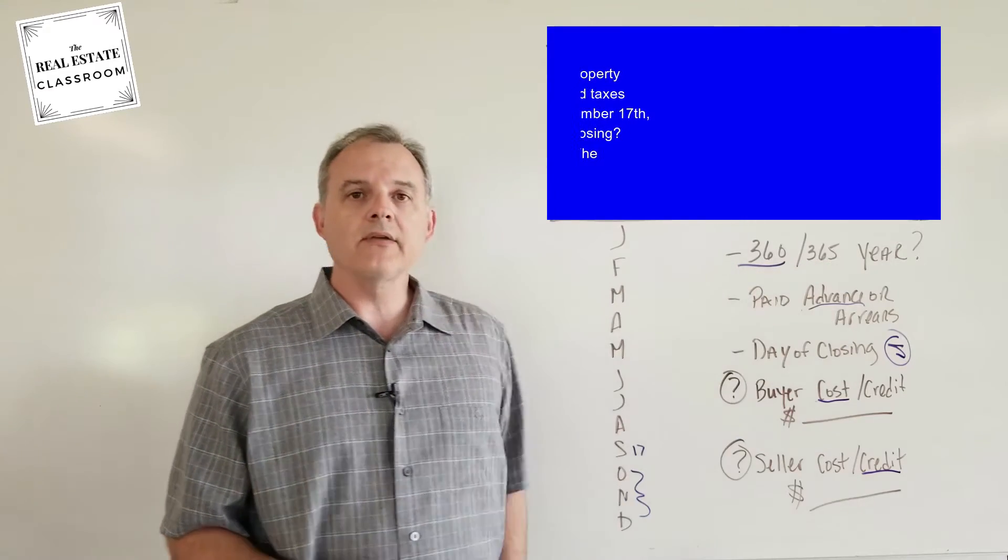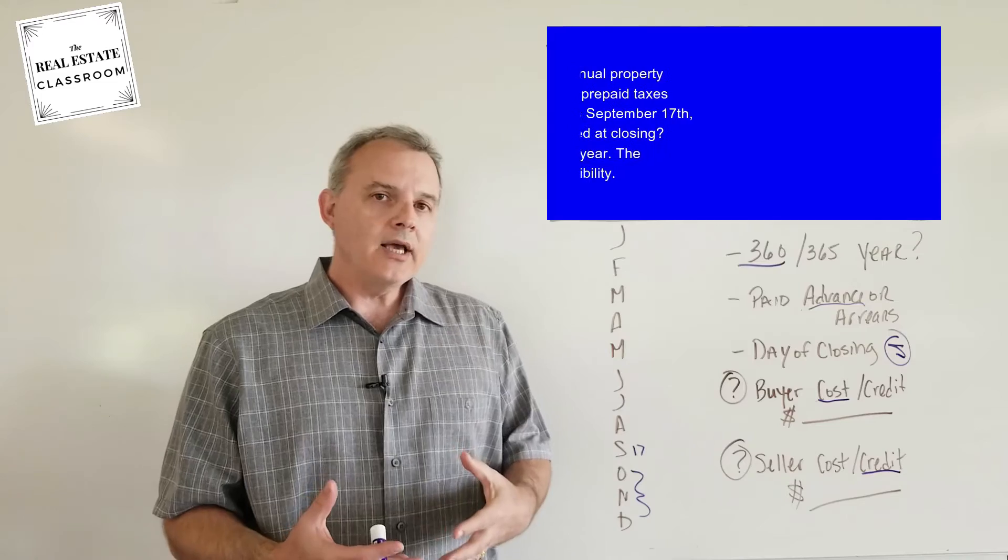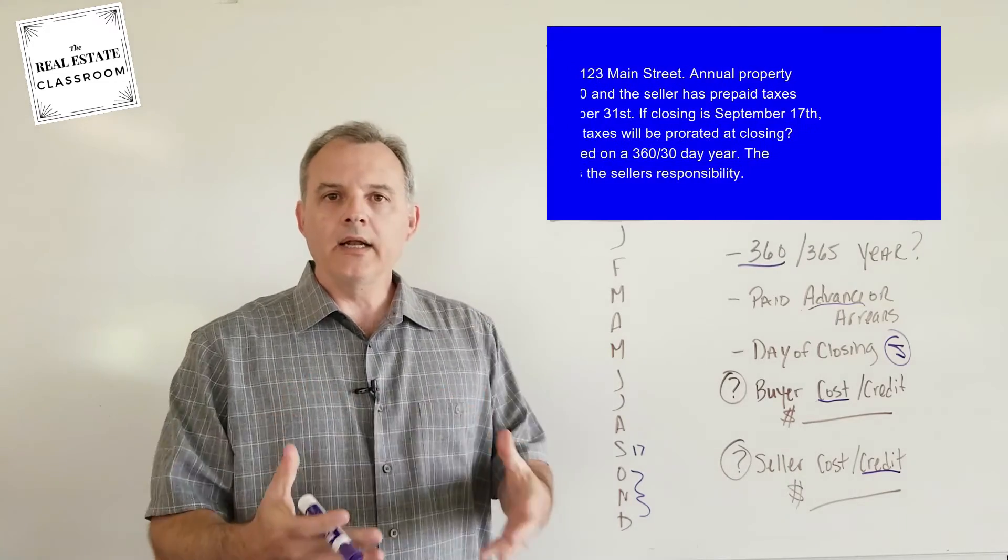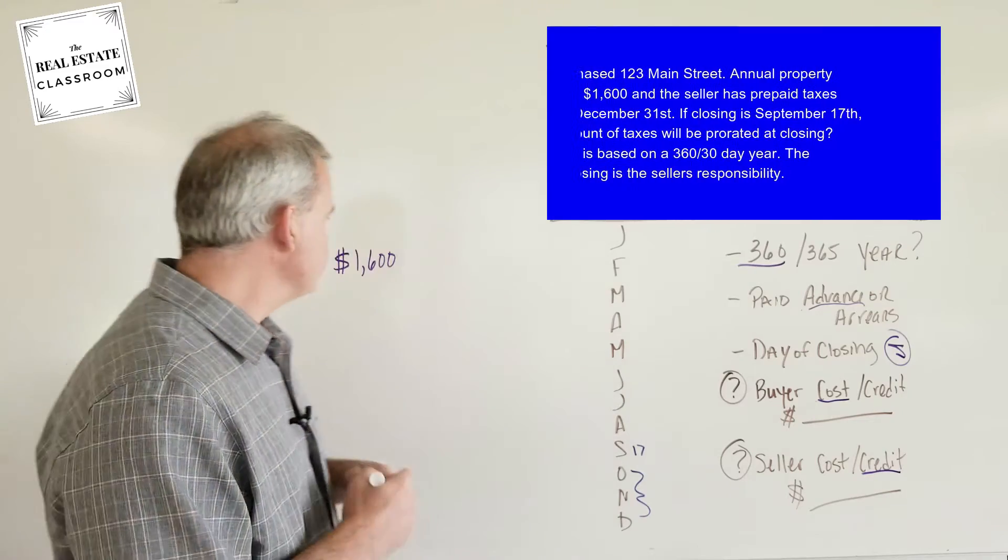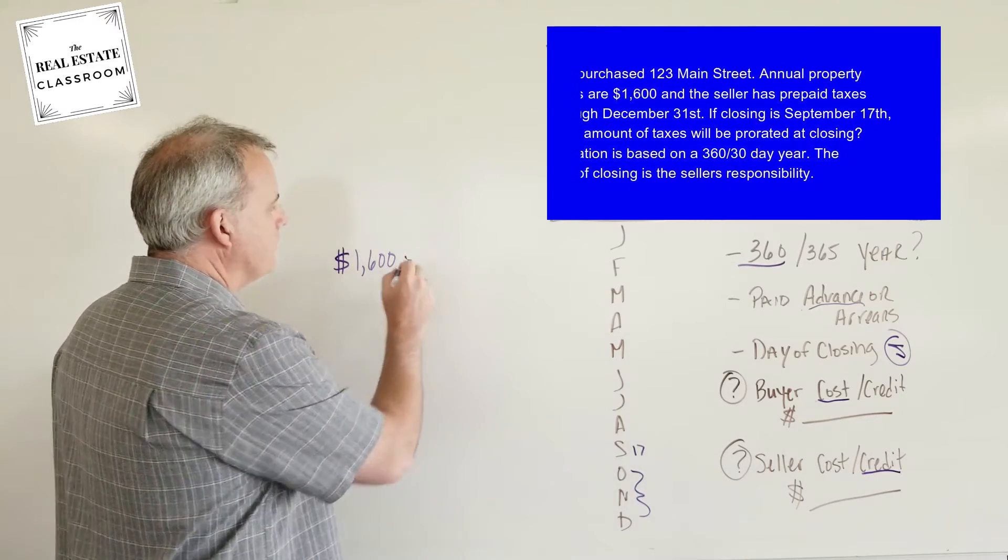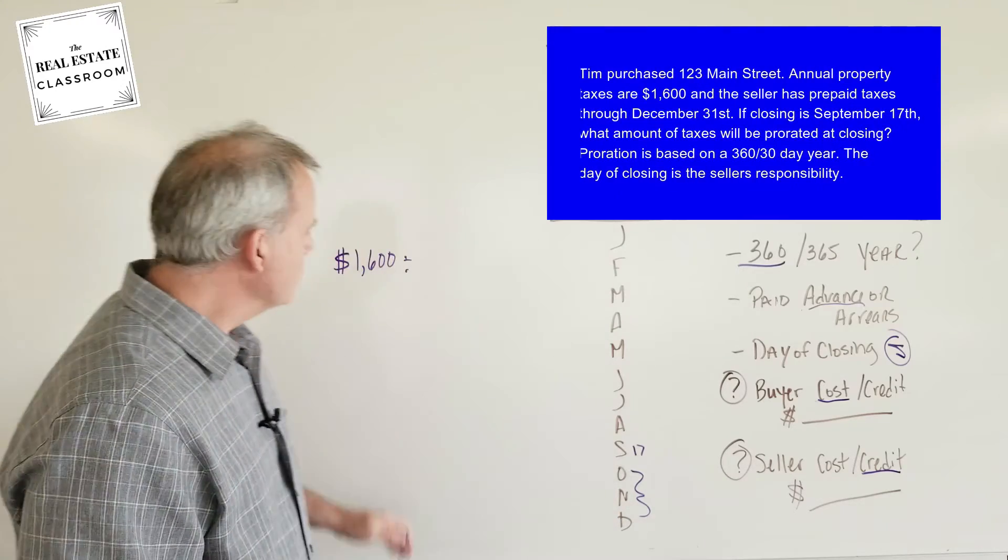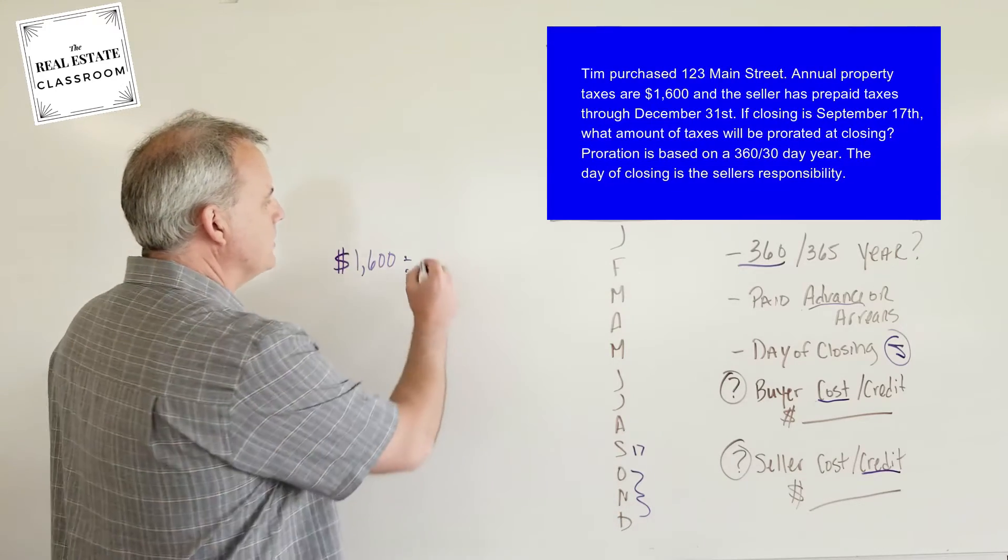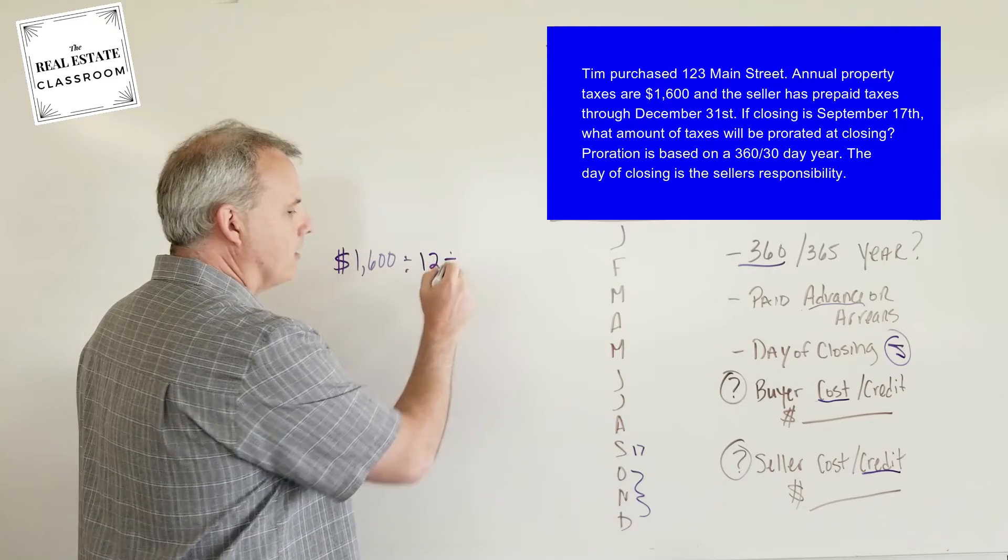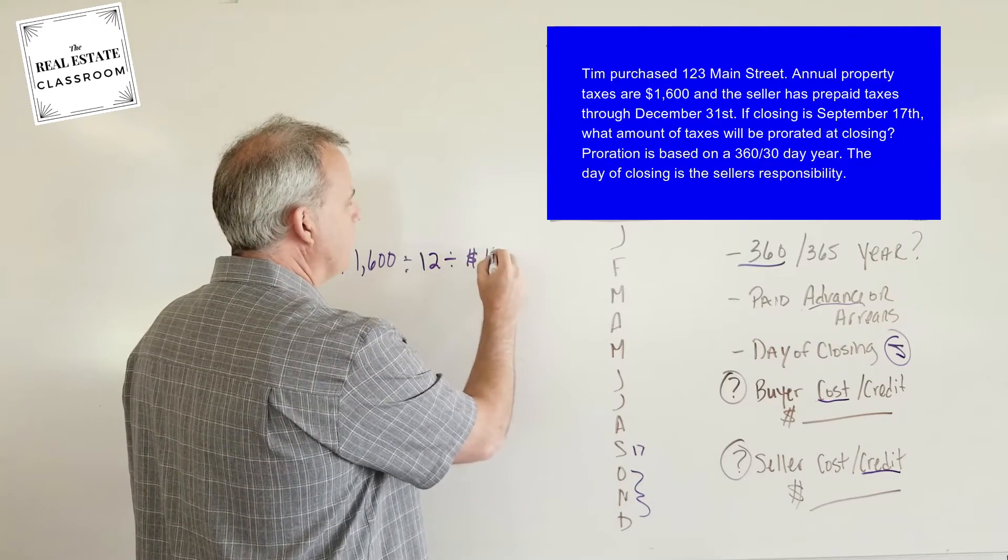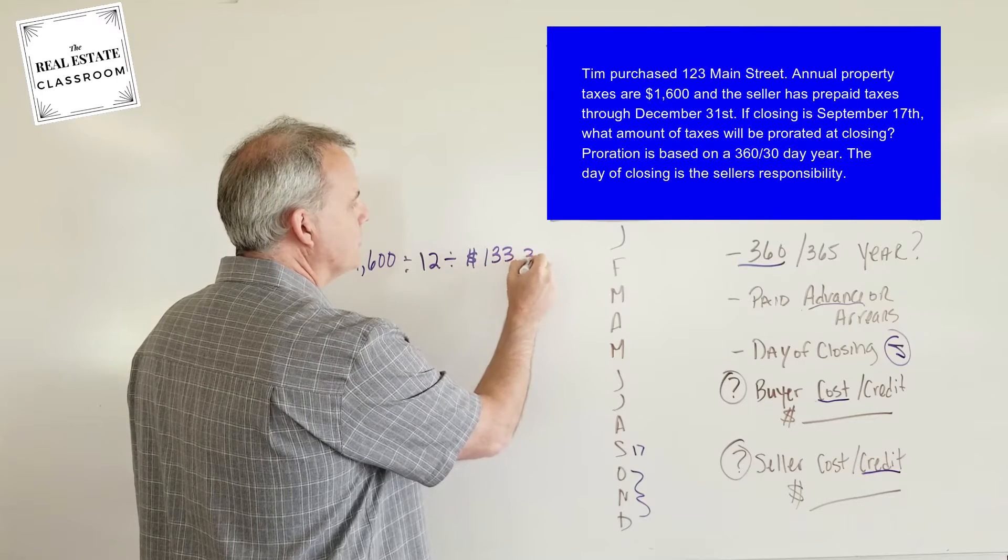We actually have to break down the months, then the per diem amount. And I'll explain why that matters in just a minute. So we're going to take, because we've got to break down these months here first. $1,600 divided by 12, because there are 12 months in the year, that gives us a monthly rate of $133.33.